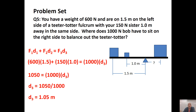Problem 5: You weigh 600 newtons and sit 1.5 meters left of the fulcrum. Your 150-newton sister sits 1 meter away on the same side. Bob, who is 1,000 newtons, sits on the other side. How far must Bob sit? Setting up: 600 times 1.5 plus 150 times 1 equals 1,000 times D. This gives 1,050 equals 1,000 times D, so D equals 1.05 meters.